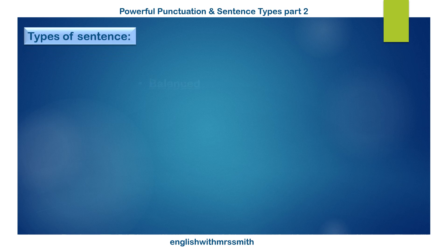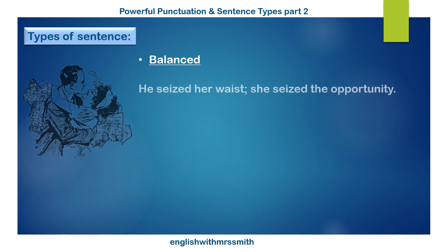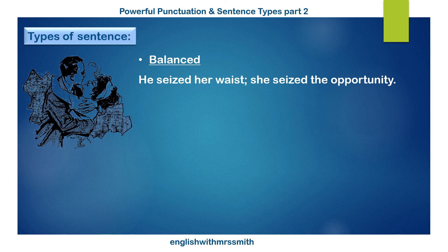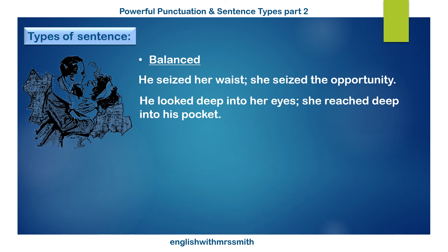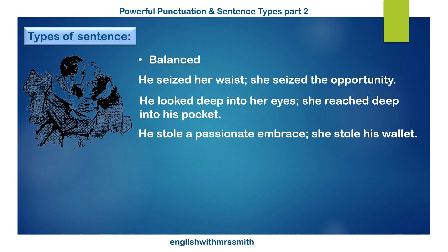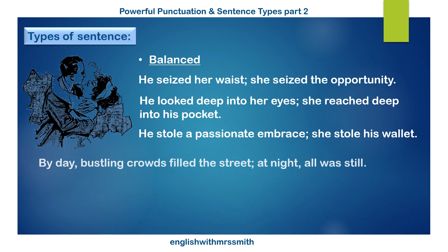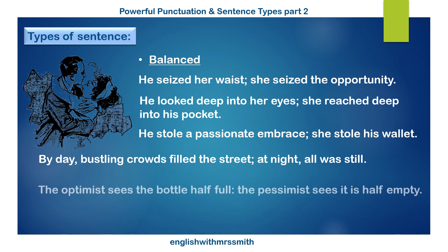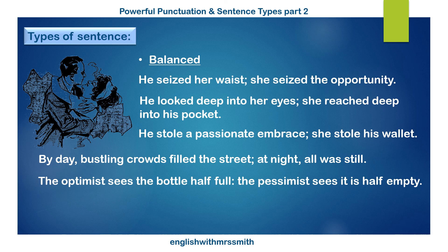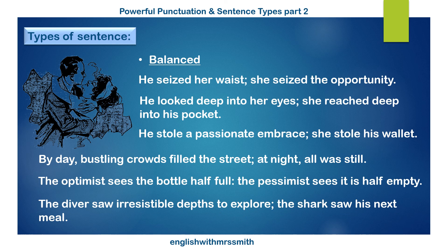A balanced sentence is usually constructed with two or three similar clauses which are closely connected. It may be used to highlight a similarity or to emphasise a contrast. Have a look at these examples. Notice how a compound sentence is a really useful tool in creating a balanced sentence.